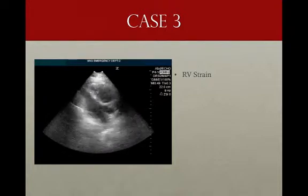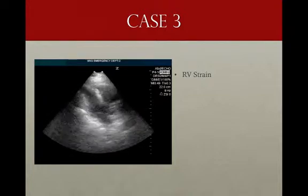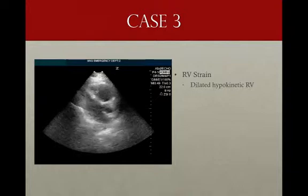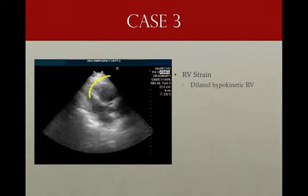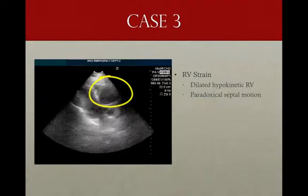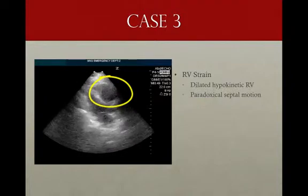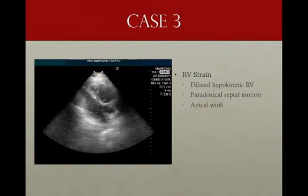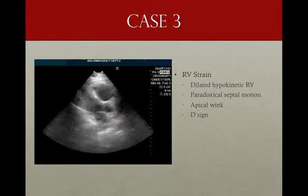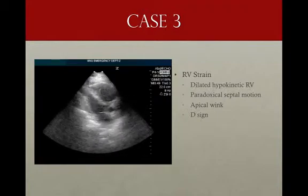Let's talk about other clues to RV strain: the dilated hypokinetic right ventricle, paradoxical septal motion, apical wink, and D sign. We'll go over these in the next slide.